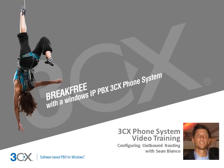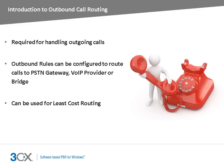In this nugget, we will show how to configure outbound call routing in 3CX phone system. You need to configure the PBX to identify outbound calls and how these calls should be handled. You will need to let the PBX know which calls should be routed to your PSTN gateway or VoIP provider. You can also use outbound rules to route calls to bridges.